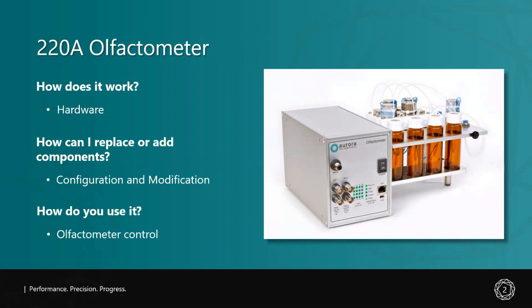First off, I will describe how the 220A Olfactometer works with particular attention on the functionality provided by the mass flow controllers, front panel connections, and solenoid valves that are used to control gas flow. Next, I will discuss the modification and configuration of the system by walking through initial setup and how to add, remove, or replace components, including add-on modules.